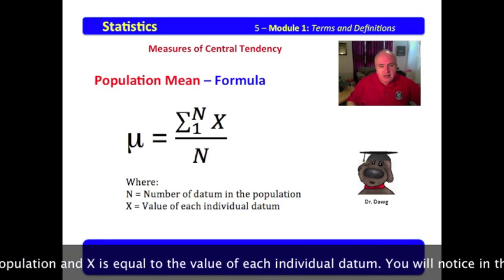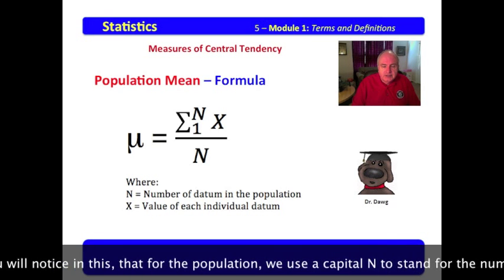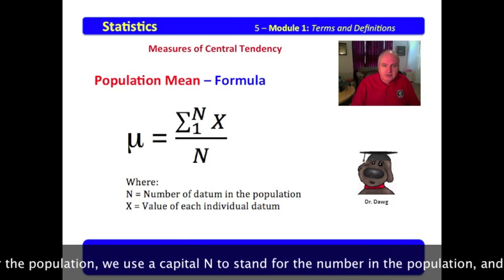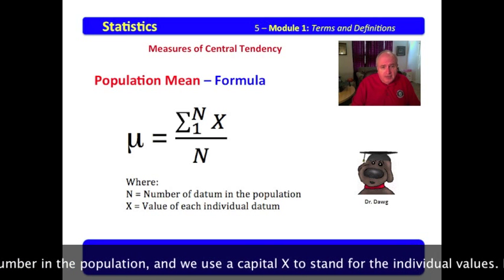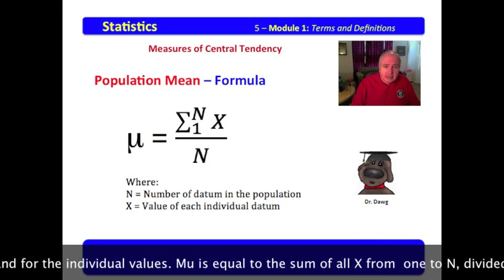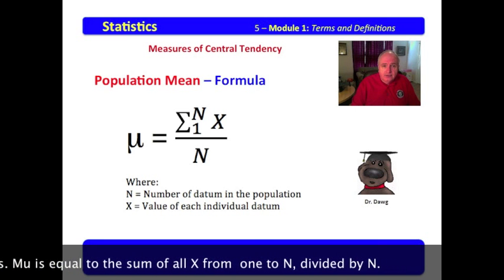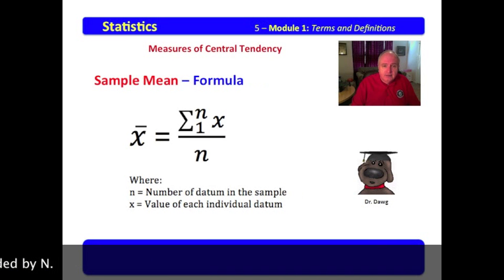And X is equal to the value of each individual datum. You will notice in this that for the population, we use a capital N to stand for the number in the population, and we use a capital X to stand for the individual values. Mu is equal to the sum of all X from one to N, divided by N.